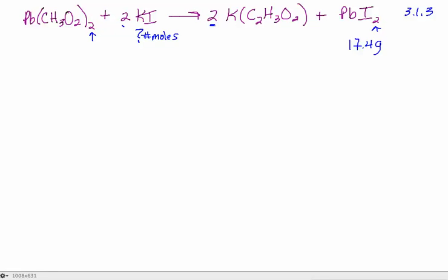To solve this problem, I use this approach. I write what I have been given, which was 17.4 grams of lead iodide, and I put it over one. And then for any stoichiometry problem, I then use conversion factors to convert the unit I have here, which is grams of lead iodide, to the wanted unit, which is number of moles of potassium iodide.